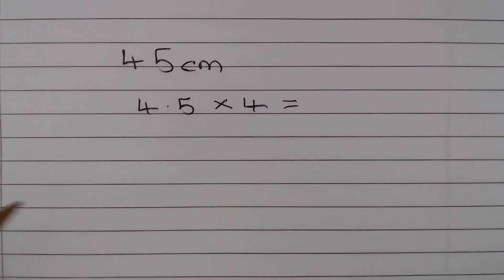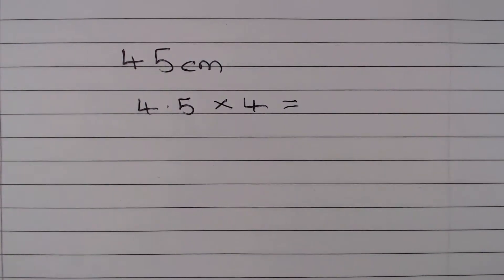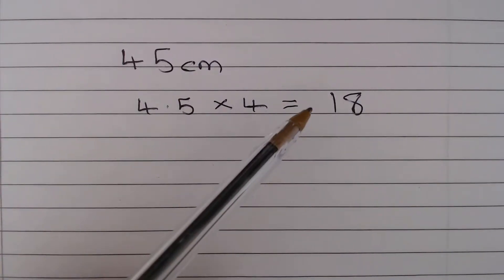We can multiply by 4 quickly by multiplying by 2 twice. So 4.5 multiplied by 2 is 9, multiplied by 2 again gives us 18. So 40% of 45 is 18.